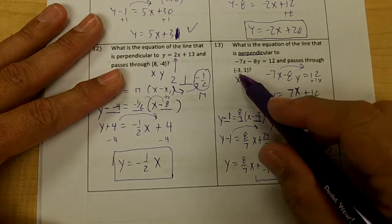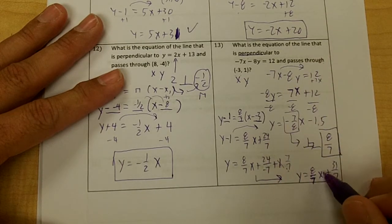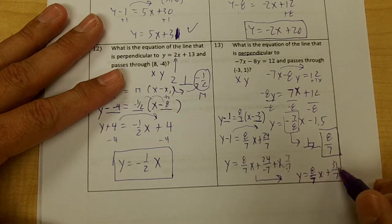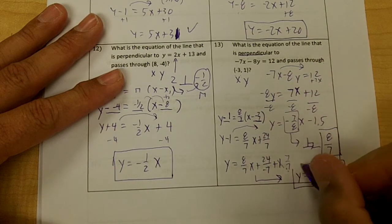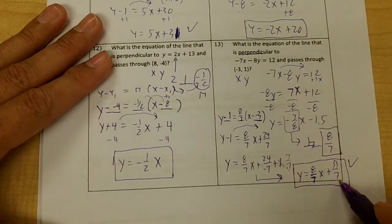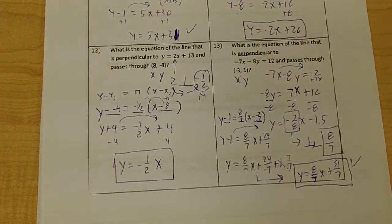And if we plugged in negative 3, we would get negative 24 over 7 plus 31 over 7, which would be 1. This checks out. That is a big fractional answer there. Thank you.